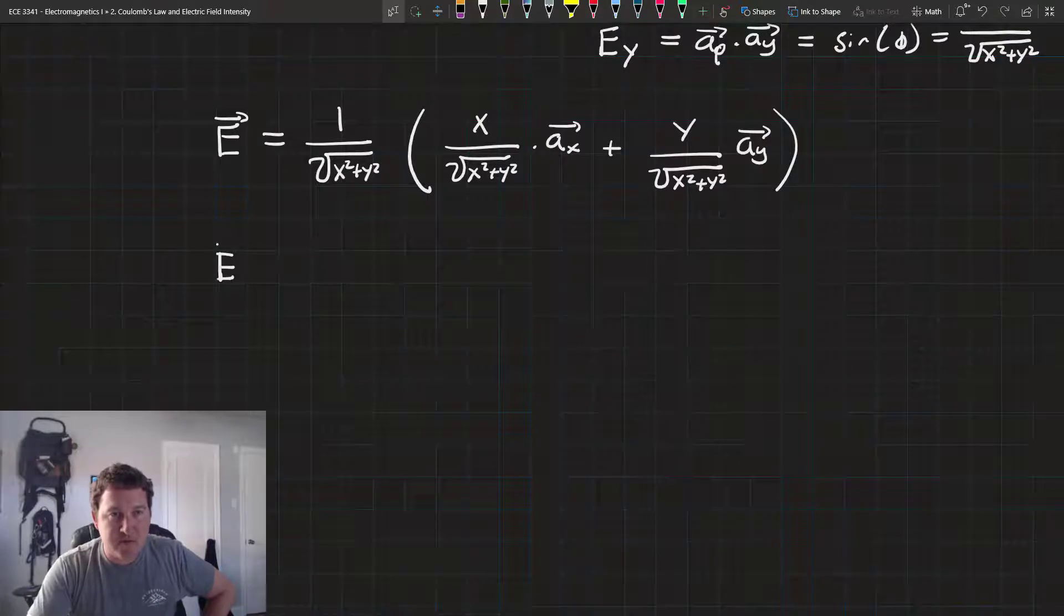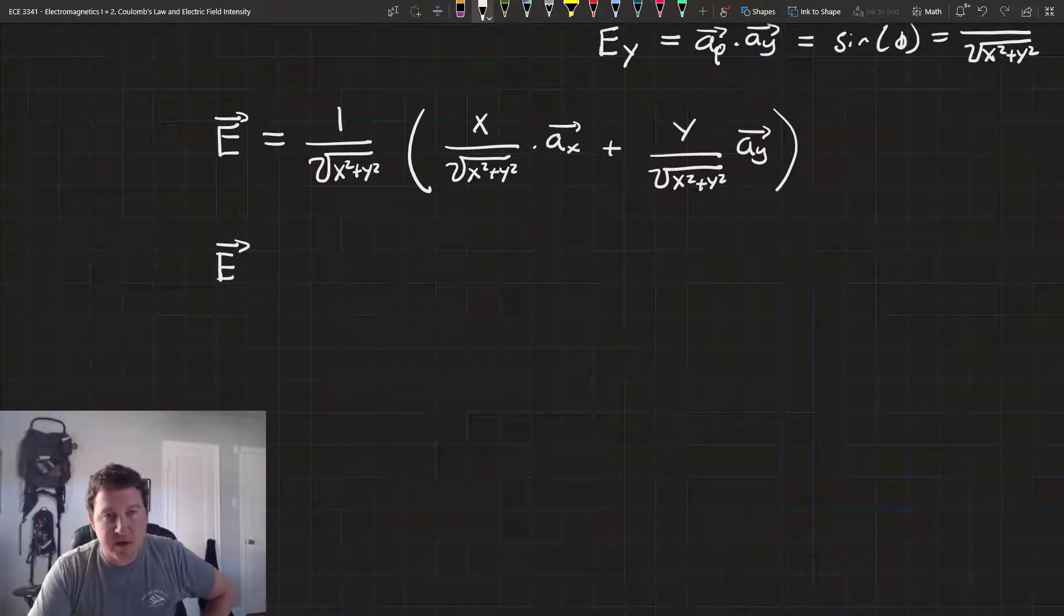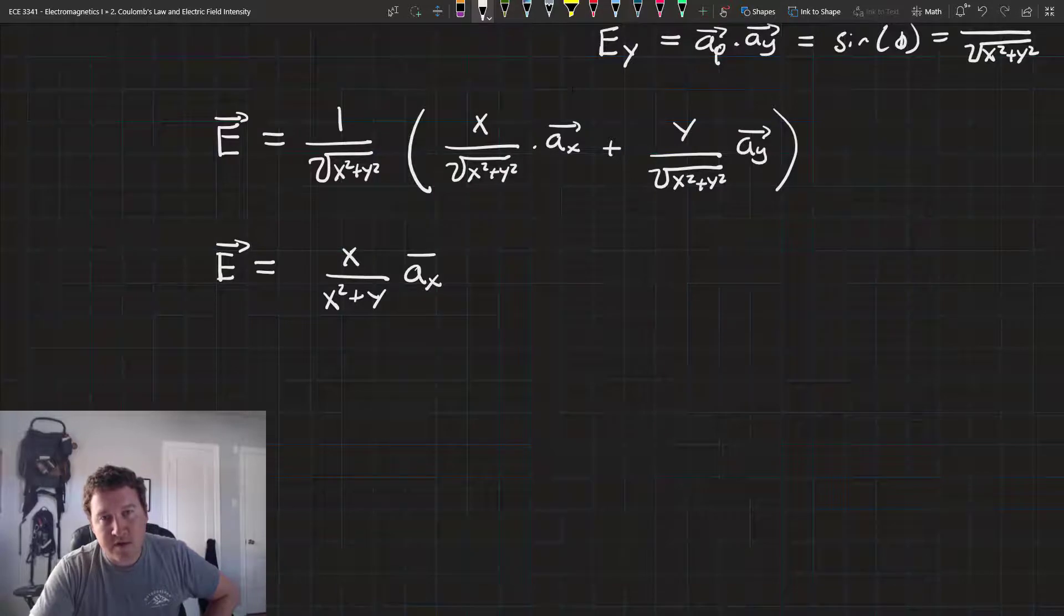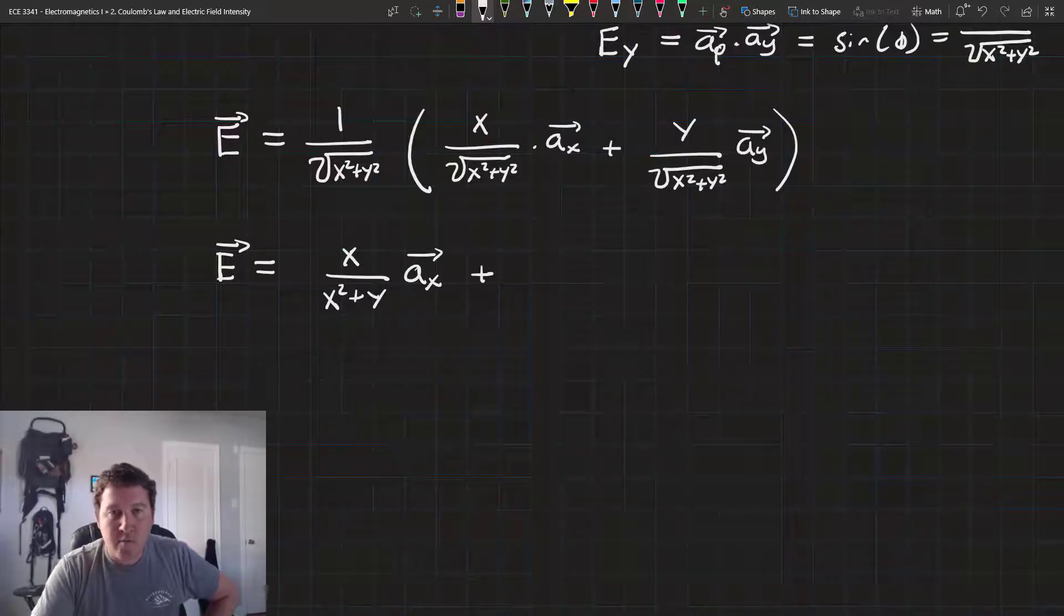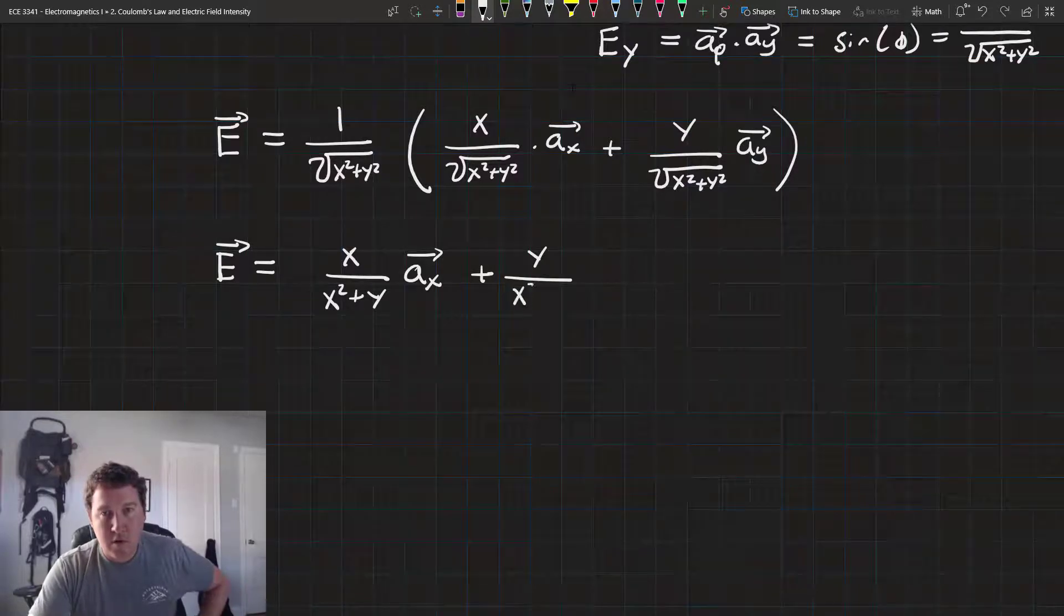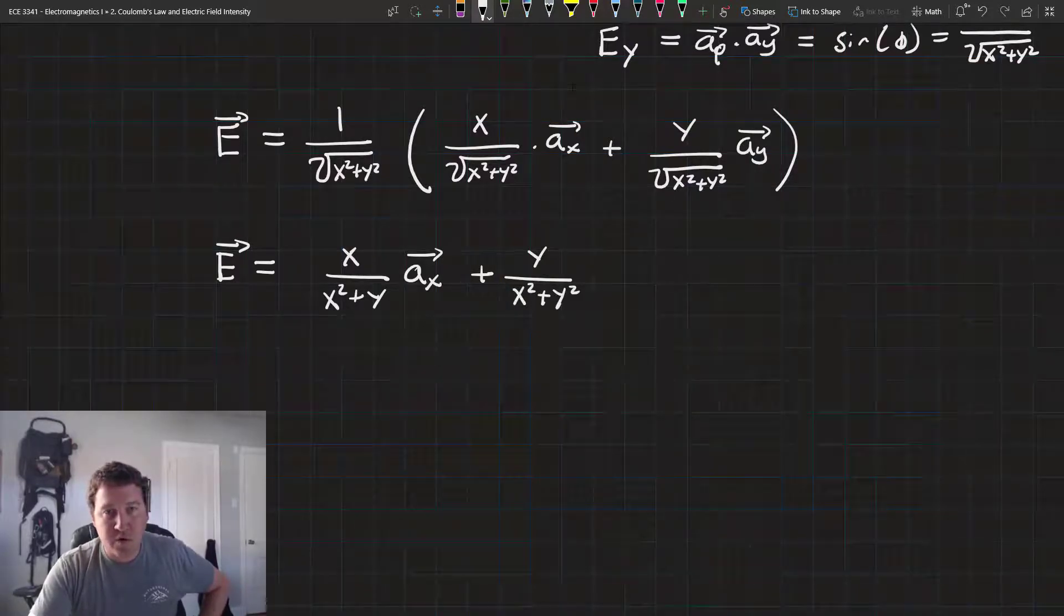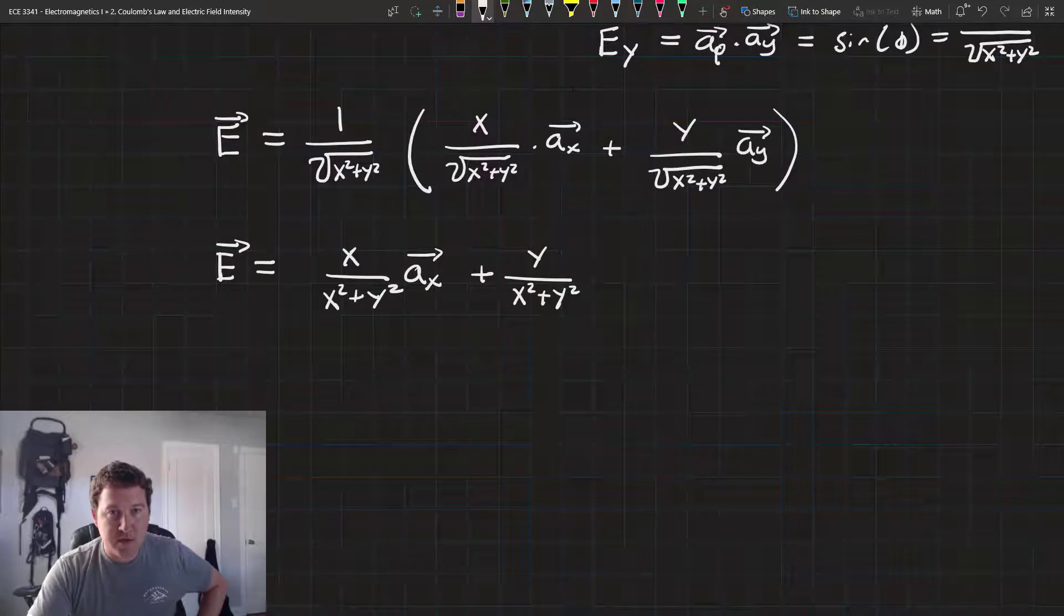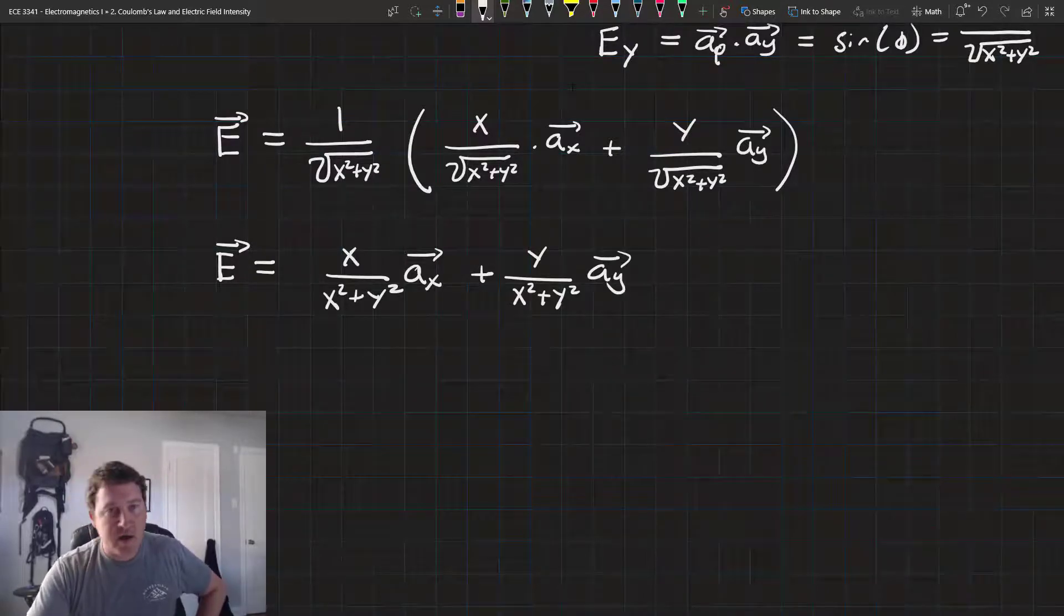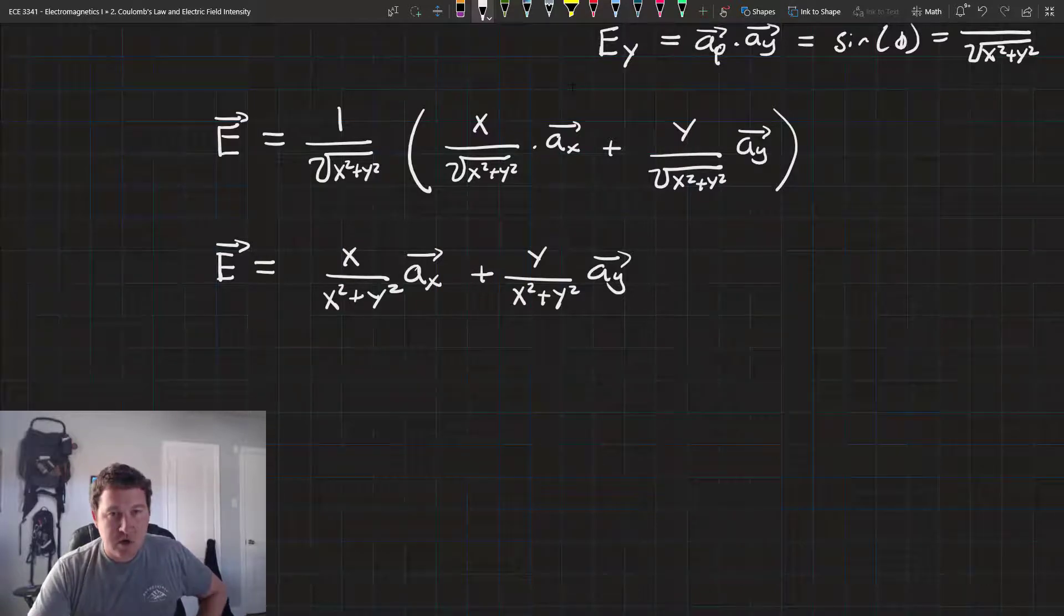We can use distributive property to simplify just a little bit and get our final form here. That is, e is equal to x over x squared plus y squared times the unit vector a sub x, plus y over x squared plus y squared times the unit vector a sub y.